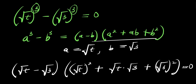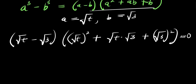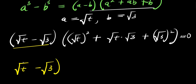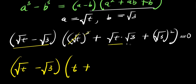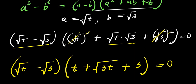From here, we consider root t minus root 3, times — simplifying: root t squared gives t, plus root t times root 3 gives root 3t, plus root 3 squared gives 3 — and this equals 0. So we have: (root t minus root 3)(t plus root 3t plus 3) equals 0.